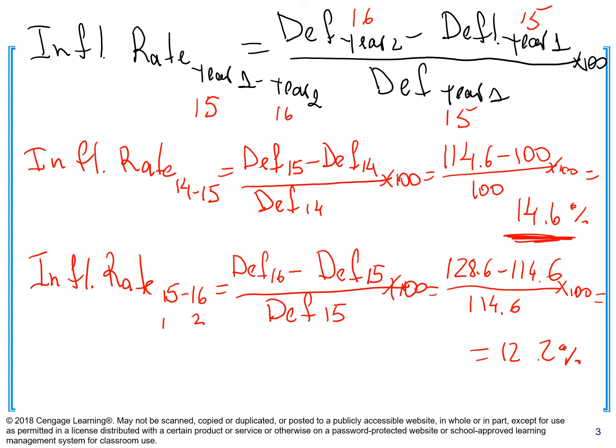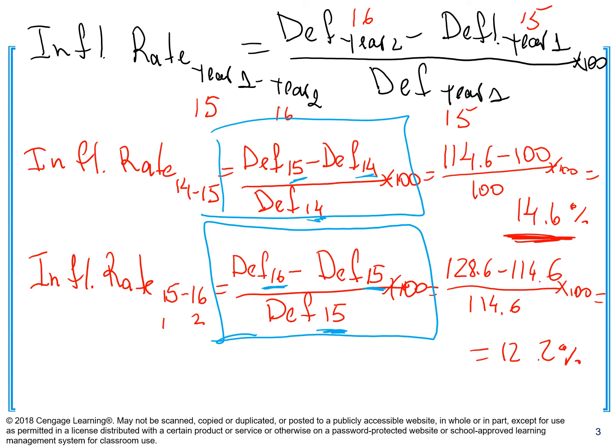When doing homework or practice problems, always write down the formula first, make sure you have the correct years for each variable, and then plug in the numbers to get your final results. I think that's it for chapter five. I'll post a couple more videos analyzing GDP for the United States. I hope that after this video and all the videos you've watched, you know more about GDP. Good luck and I'll see you in the next video.